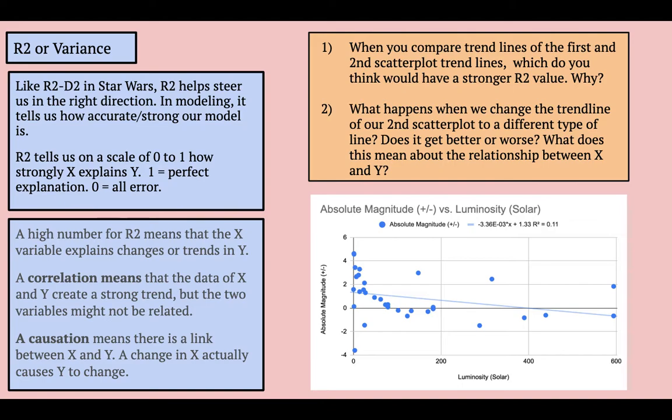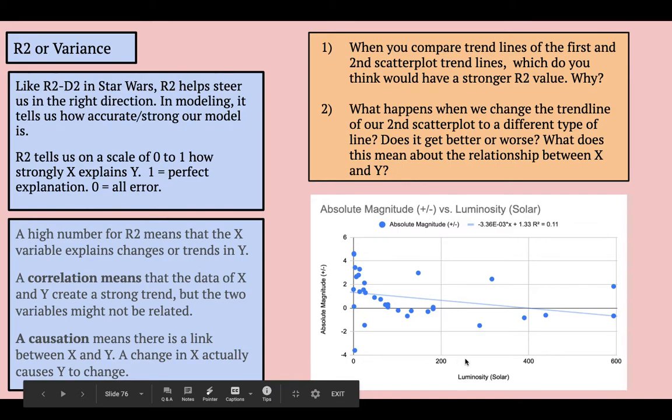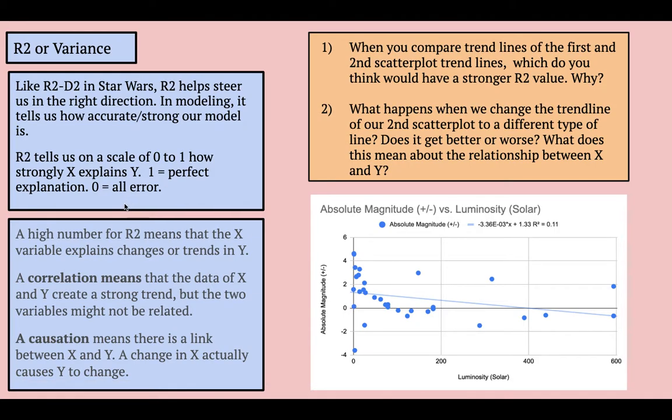Now a high R2, which is going to be closer to 1, means that X is really good at explaining Y. So as solar luminosity changes, we should expect to see a really big change in absolute magnitude. An R2 of 0 means that we have a bunch of chaos. It's all there where nothing is related between X and Y. Now a high number for R2 can mean two things. It can mean a correlation in that X and Y simply just have a strong relationship. The two variables actually might not be related. I might find that taller people tend to eat more peanut butter and jelly sandwiches in a scatter plot, but that doesn't necessarily mean that eating more peanut butter and jelly sandwiches makes you tall, or being tall suddenly makes you like peanut butter and jelly sandwiches.